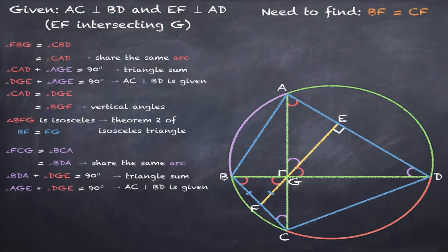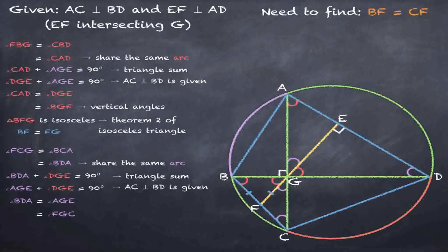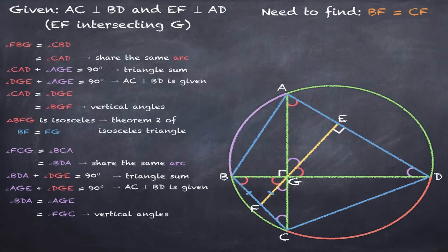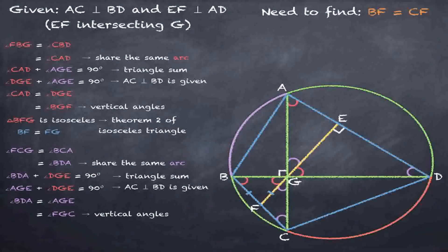By looking at these two equations, we find that angle BDA equals angle AGE. And angle AGE equals angle FGC by vertical angles.